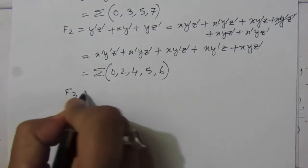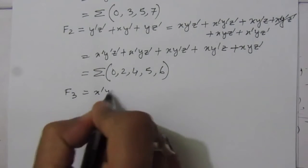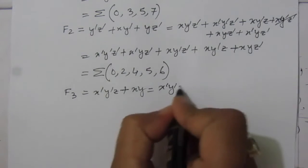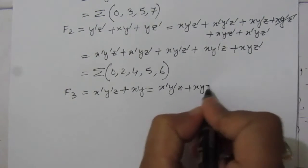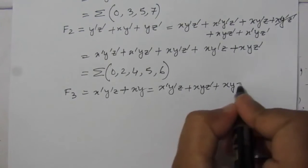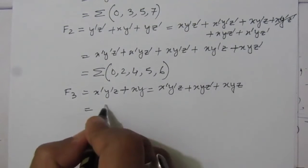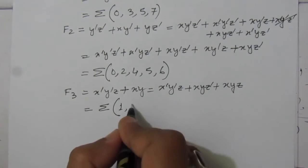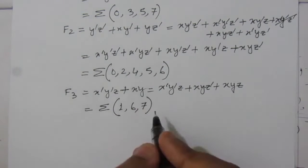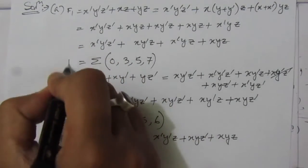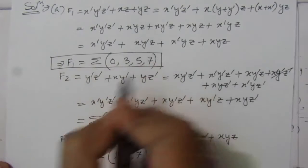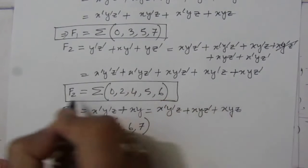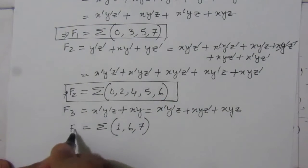The third function is F3 = x-bar y-bar z + x y. We can rewrite it as x-bar y-bar z + x y z-bar + x y z. In sum-of-minterms form: F3 = Σm(1, 6, 7).